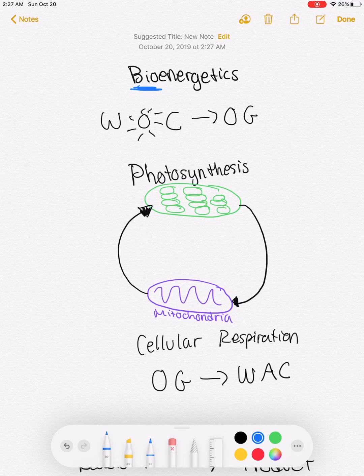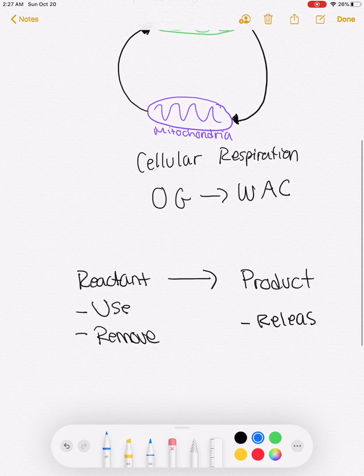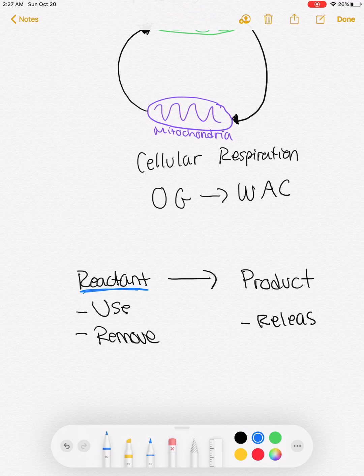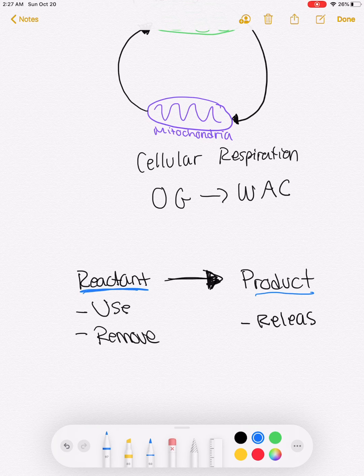The two processes we talked about in this unit were photosynthesis and cellular respiration, both of which are chemical equations. For any chemical equation, we have reactants on the left of the arrow and products on the right of the arrow. Chemical equations are read from left to right. Reactants are things that I start with, and products are things that I end with.